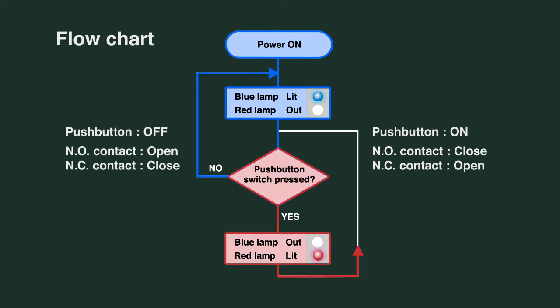Then, depending on whether the push button is on or off, operation either returns to the beginning or proceeds to another step—in this case, turning the blue light off and turning the red light on.